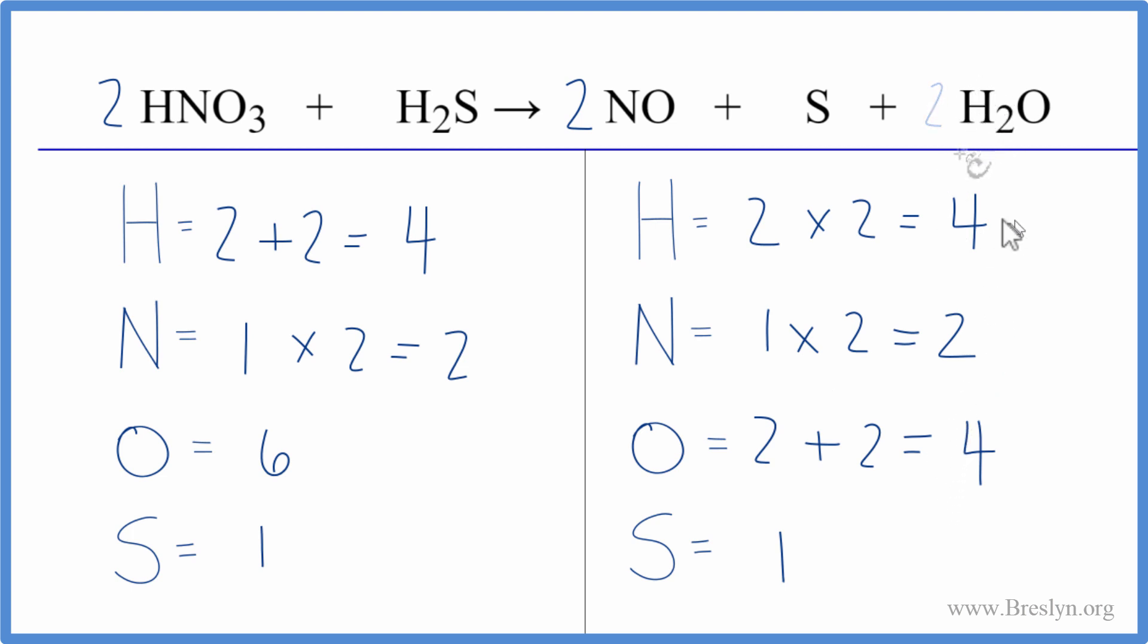Let's change the two in front of the water. So we make that a four, and now we're going to update our hydrogen and our oxygen. For the oxygen, we have one times two, two plus one times the four. That gives us six oxygens. So we did balance the oxygen atoms.